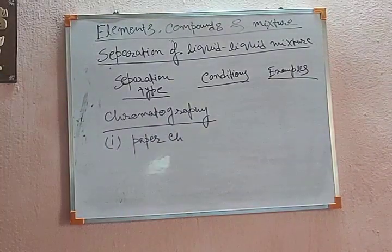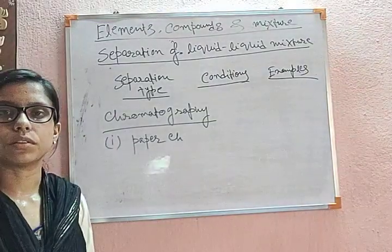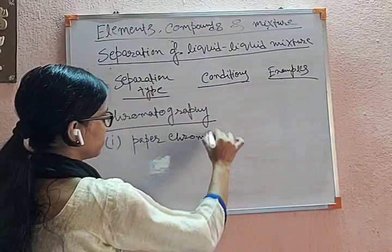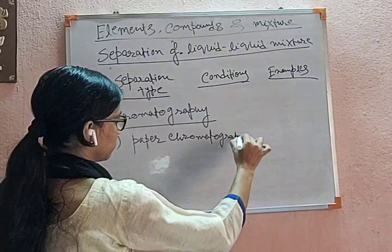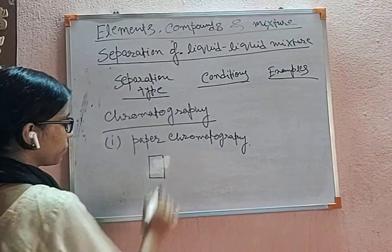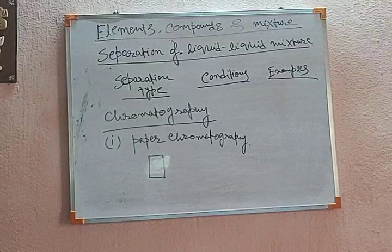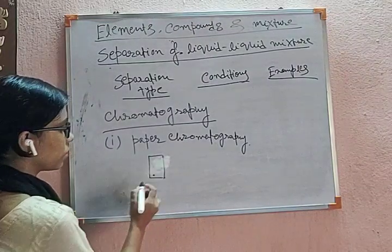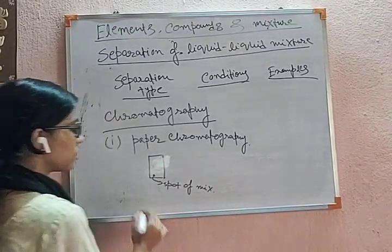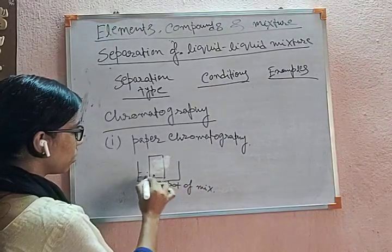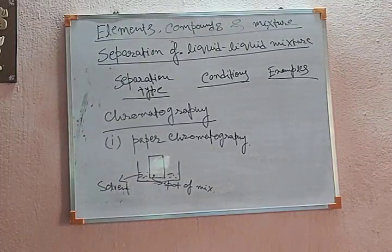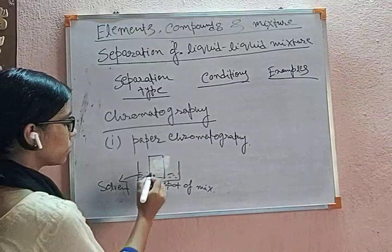Paper chromatography is one part of chromatography, as there are various types. In paper chromatography, a plate is taken where the spot of the mixture is placed here. This is the spot of the mixture for liquids, and this is a chamber for solvent where some solvent is taken.